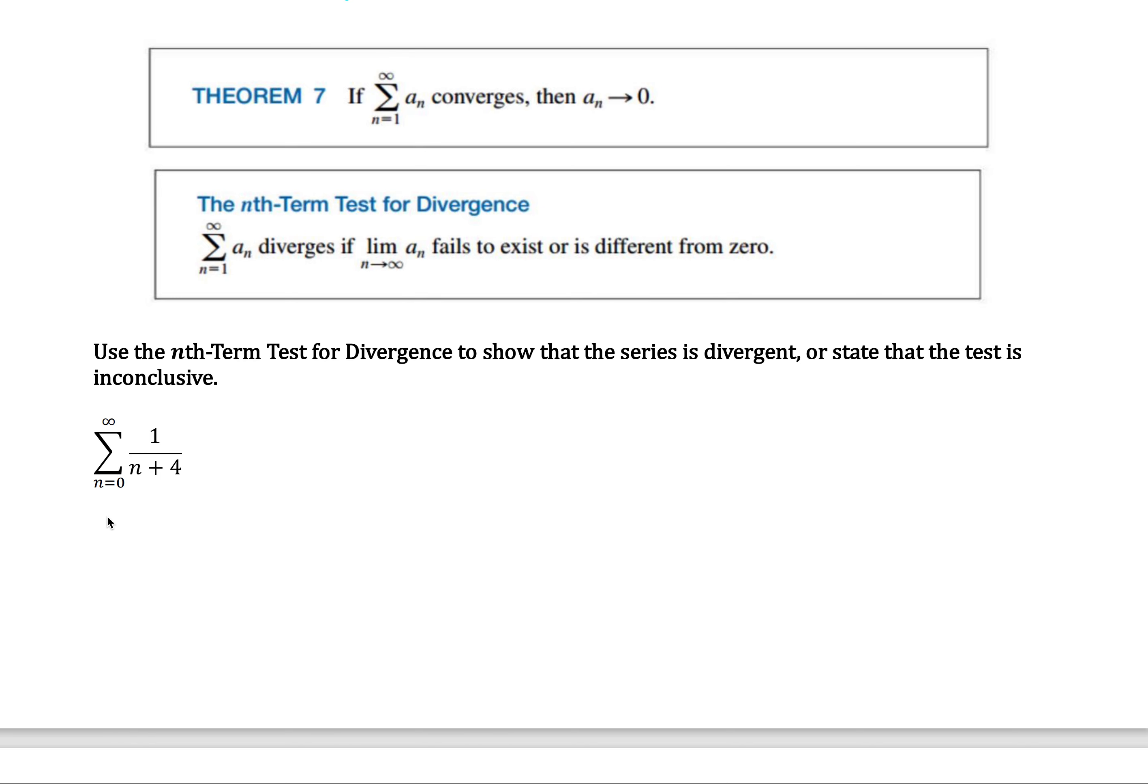The first example says use the nth term test for divergence to show that this series is divergent or to state the test is inconclusive. So if I look at the limit as n approaches infinity of one over n plus four,